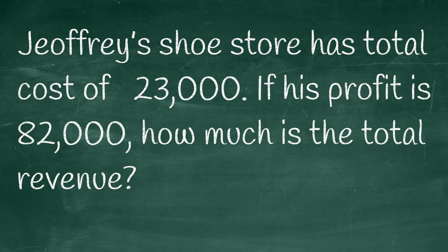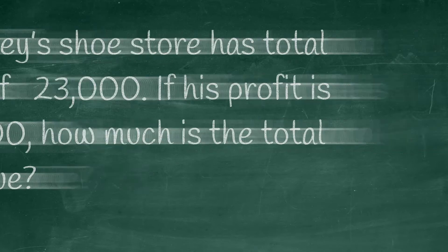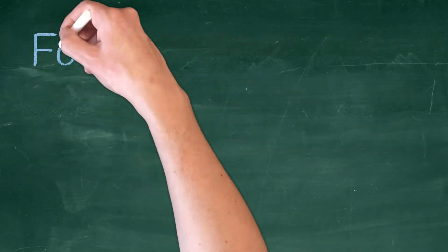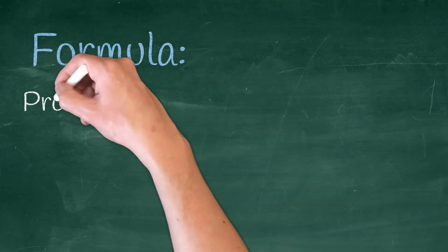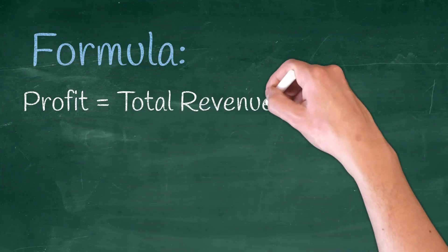Joffrey's shoe store has a total cost of 23,000 pesos. If his profit is 82,000 pesos, how much is the total revenue? This time, we are looking for the revenue. The profit and the cost are given, so to get the revenue we need to modify the original formula.